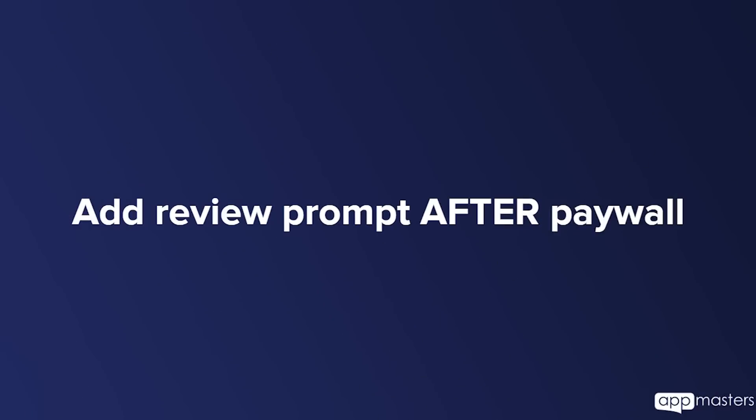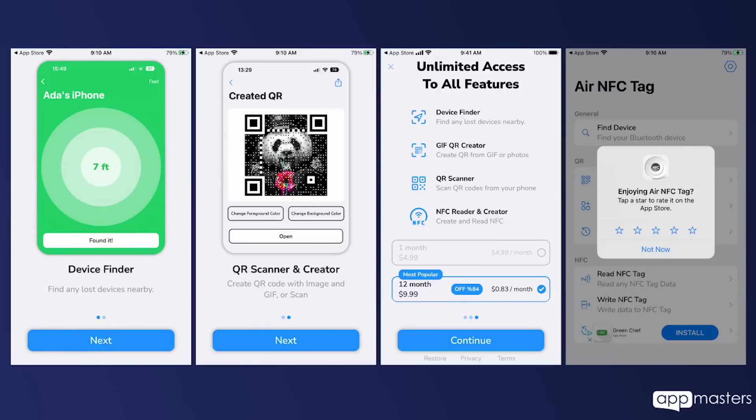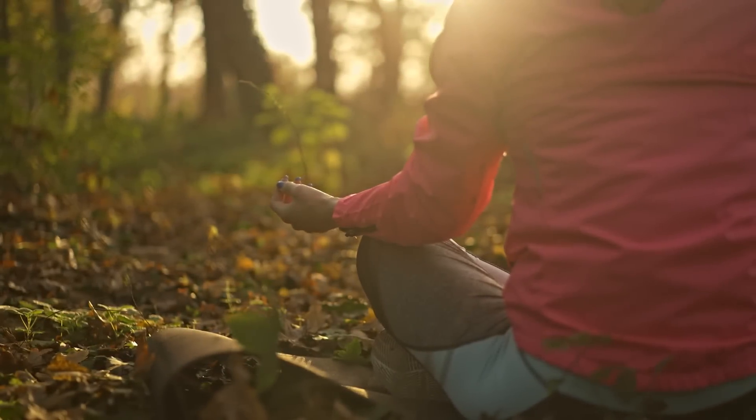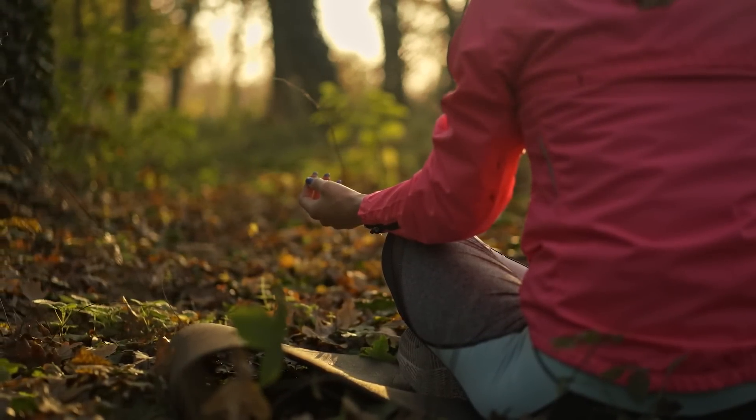Number three: show the default App Store review prompt during the onboarding process and after your paywall. That has shown to increase your number of ratings, and your average rating doesn't suffer as much as you think. About 1% of downloads will give you a rating. You can also trigger it on second open, or after a user has completed an action — like finishing a meditation or adding a to-do — and ask for that review right then and there.